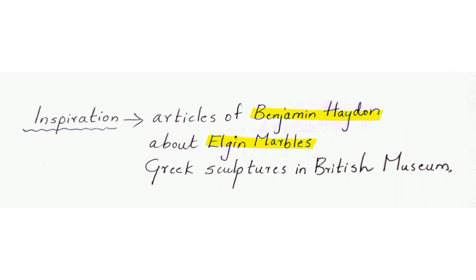Lord Elgin wanted to bring these sculptures to Britain in order to make a museum. He claims to have taken permission from the authority of Greece in order to take these sculptures, but the story has a lot of disputed versions.